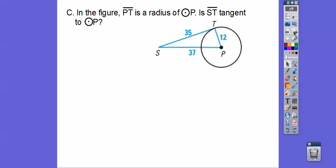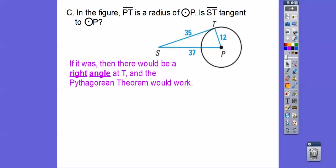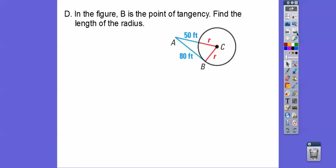For example here, in this figure, segment PT is a radius of circle P. So is ST tangent? It's tangent if there's a right angle right there. That means the Pythagorean theorem would work if it's a right angle. Is 12 squared plus 35 squared equal to 37 squared? We just crank out our math right there, and it finds out that yes, it is. So yes, it is a right angle, it's tangent right there.